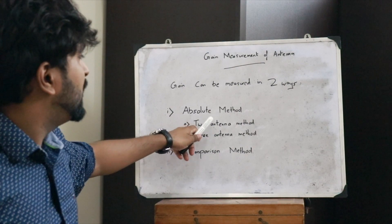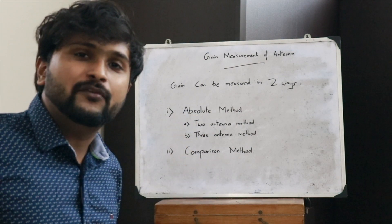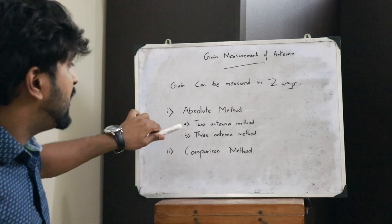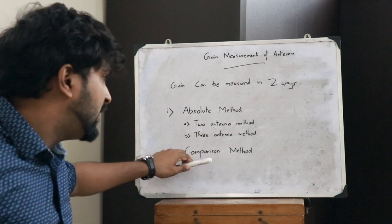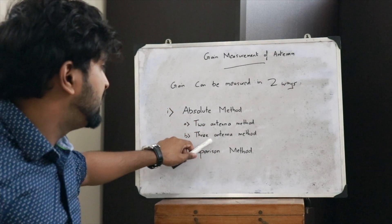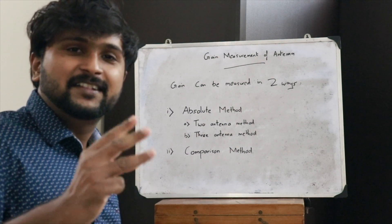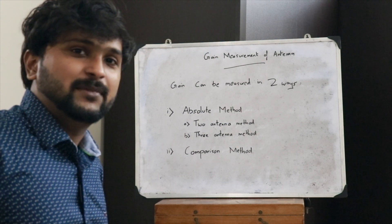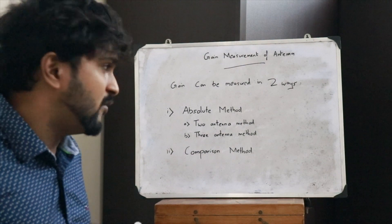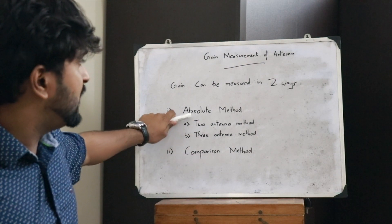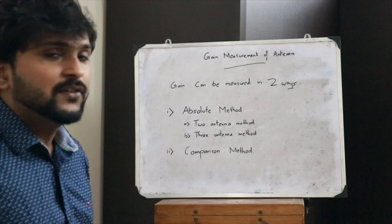Within the absolute method there are two ways in which we can calculate the gain of an antenna: one is by using two antennas and the other one is by using three antennas. So in effect there are basically three methods — two under the absolute method and one is the comparison method.